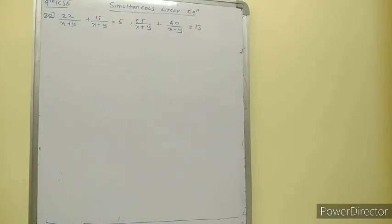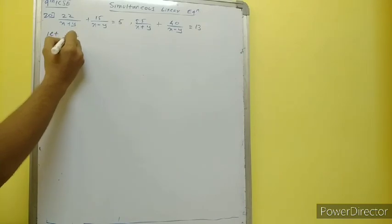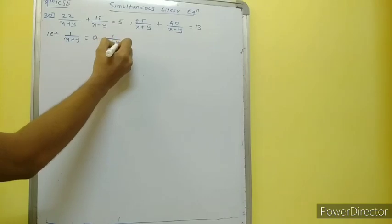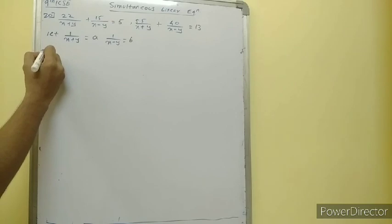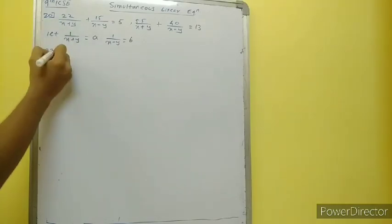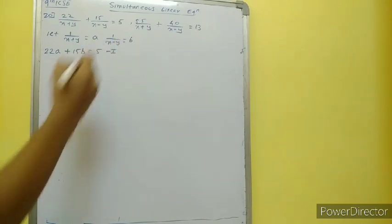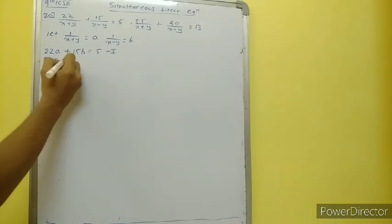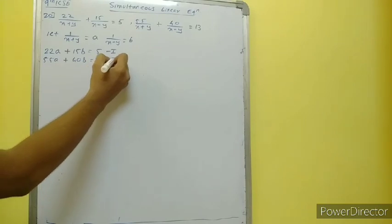In the 20th question, we have the same type of question — again x plus y and x minus y in the denominator. So let 1 upon x plus y equal to a, and 1 upon x minus y equal to b. So: 22a plus 15b is equal to 5, and 55a plus 40b is equal to 13.